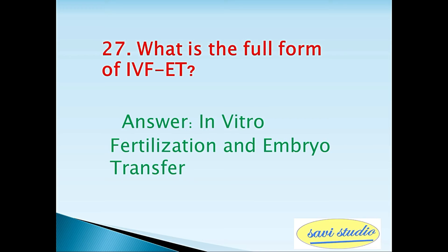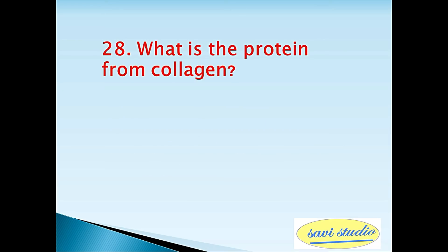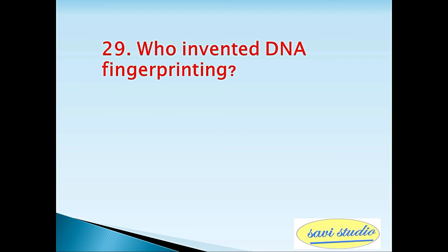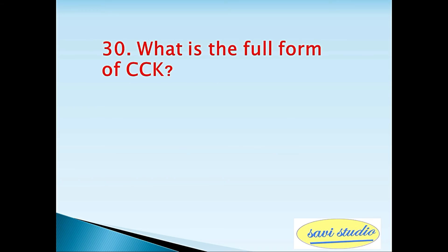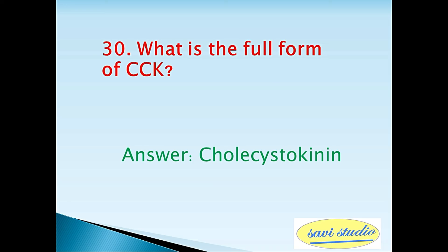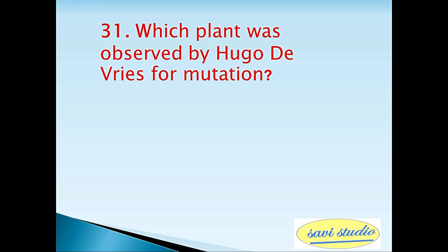Twenty-sixth question: Holstein Friesian is a native cow breed from which country? Answer: Holland. Twenty-seventh question: What is the full form of IVF-ET? Answer: In Vitro Fertilization and Embryo Transfer. Twenty-eighth question: What is the protein generated from collagen? Answer: gelatin. Twenty-ninth question: Who invented DNA fingerprinting? Answer: Professor Sir Alec Jeffreys.